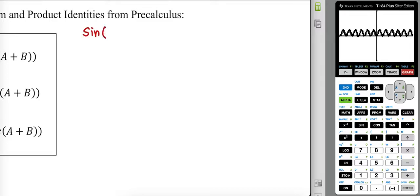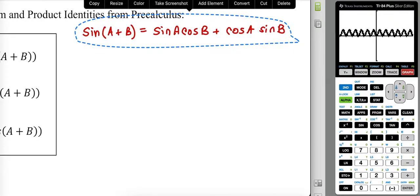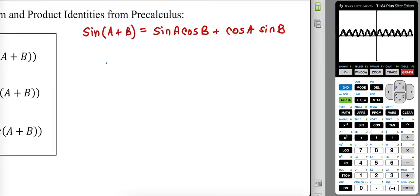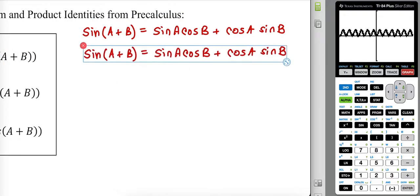If we think back to the sine a plus b identity, we're looking at sine a cosine b plus cosine a sine b. If we look at the difference identity, it's the same structure, identical, except it would have a minus sign.